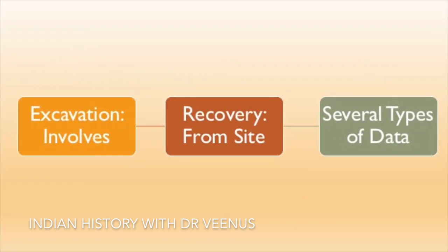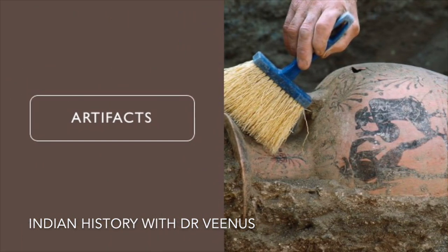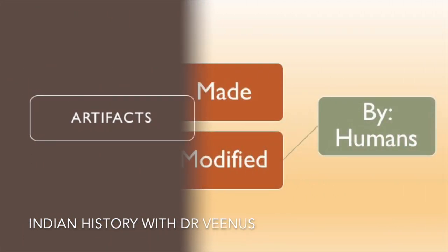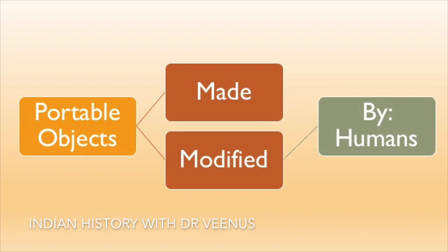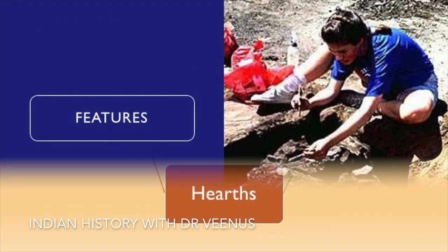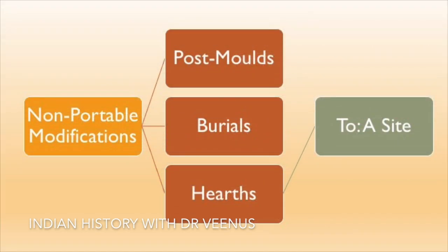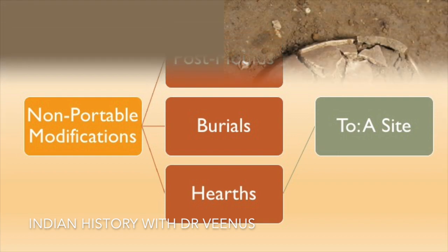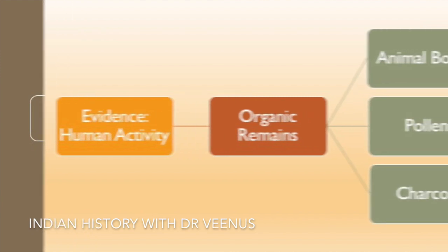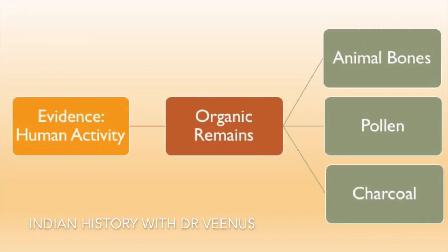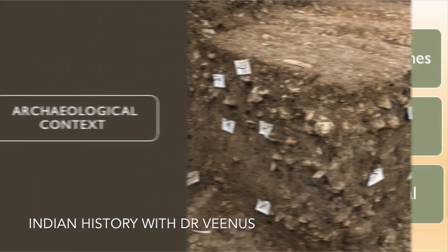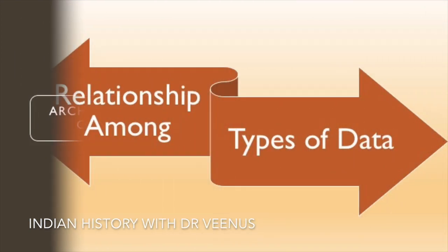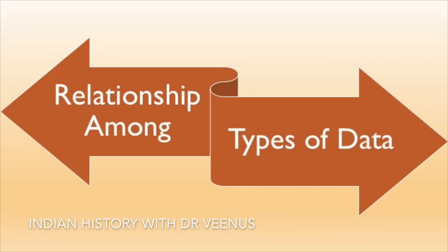Excavation involves the recovery of several types of data from a site. This data includes artifacts — portable objects made or modified by humans — features, which are non-portable modifications to the site itself such as post holes, burials and hearths, ecofacts, which is evidence of human activity through organic remains such as animal bones, pollen or charcoal, and archaeological context, i.e. relationships among the other types of data.